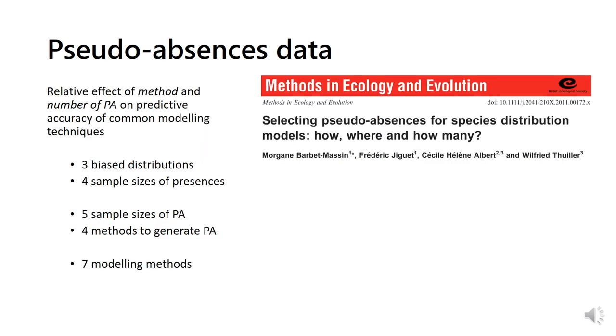Barbier-Massin and Hall try to answer the how, where, and how many pseudo-absences should be selected when doing species distribution modeling, in other words, is there a somehow best method to define pseudo-absences? To do so, they evaluate the relative effect of method and number of pseudo-absences, and predictive accuracy of common modeling techniques using biomod. The study relied on three initial biased distributions, either climatically or spatially, and four sample sizes of presences.